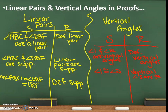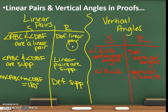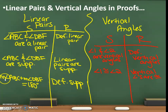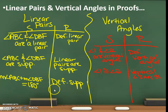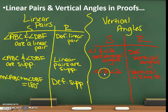Here are linear pairs and vertical angles in proofs. When you have linear pairs — for example, angle ABC and angle DBF are a linear pair — you write definition of linear pair as the reason. Then ABC and DBF are supplementary, with the reason being linear pairs are supplementary. Then measurement of angle ABC plus measurement of angle DBF equals 180 — definition of supplementary. When you have vertical angles, your statement is angle 1 and angle 2 are vertical angles, with reason definition of vertical angles. Then, when angle 1 is congruent to angle 2, the reason is vertical angles are congruent.